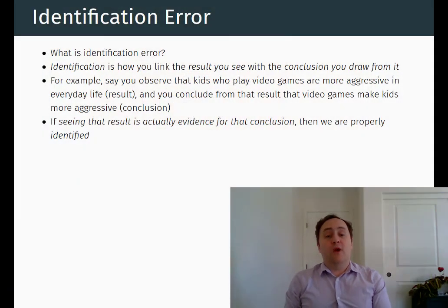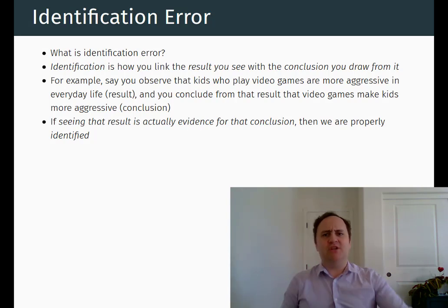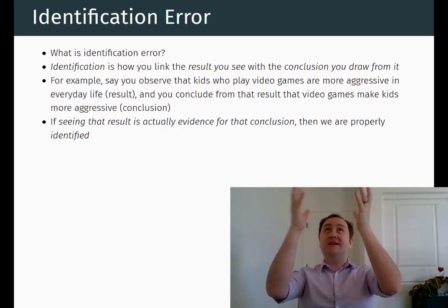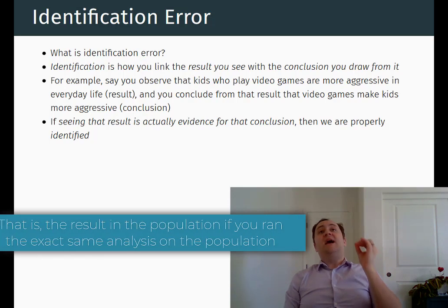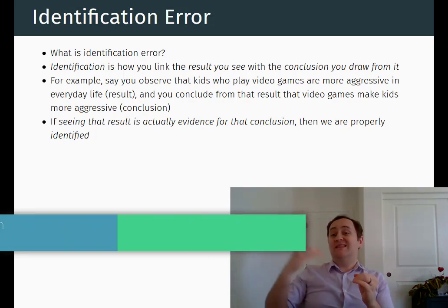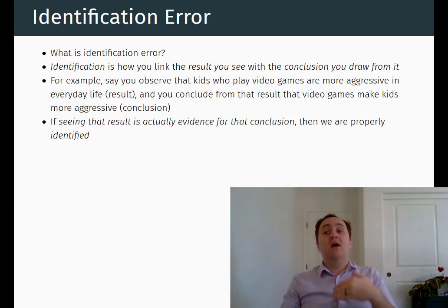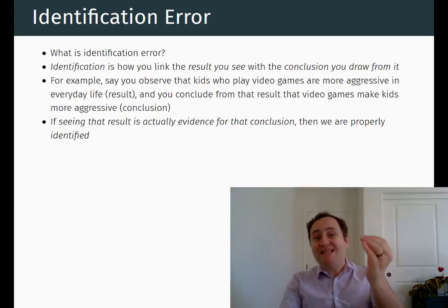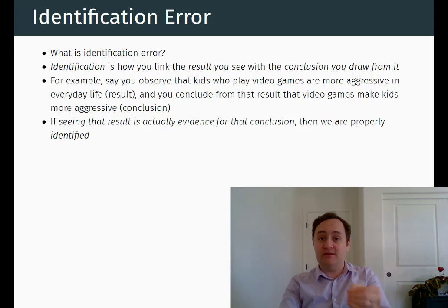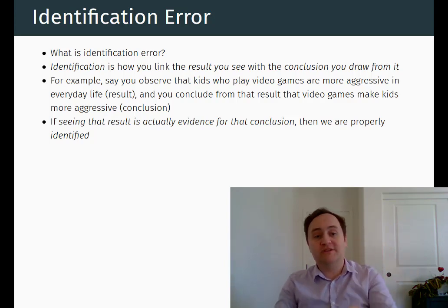Another major problem that we run up against is identification error and endogeneity. What is identification? Inference was all about taking your sample and generalizing the result you get in your data to the result you'd get in the broader population. Identification is about taking the result that you get in your sample and generalizing that to a theoretical construct — when we take the result we see in the data and we make a conclusion about how the world works. Not just what result we would get if we did that exact same calculation in the broader population, but how the world works.